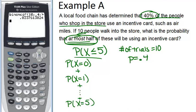And it says 0.83376. So I'm going to round that to 0.83. So the probability is 0.83 which is about an 83% chance that at most 5 people will use an incentive card.